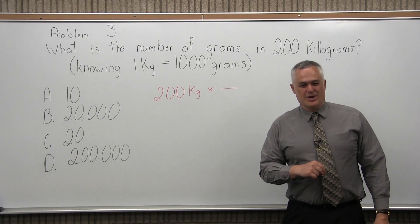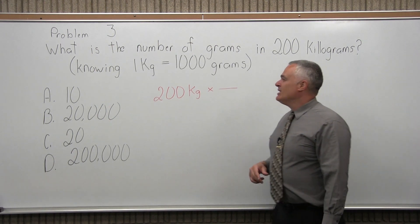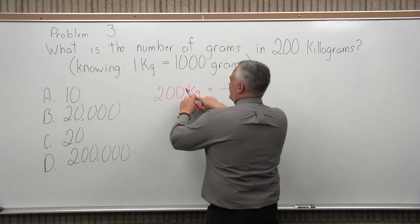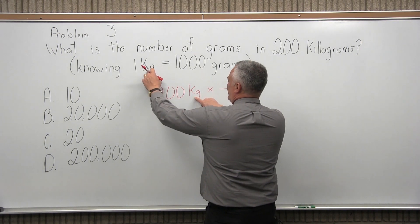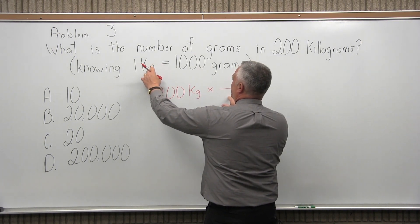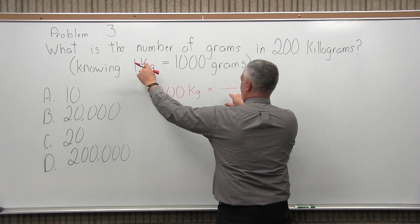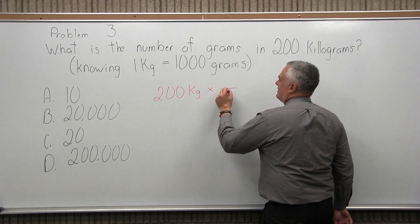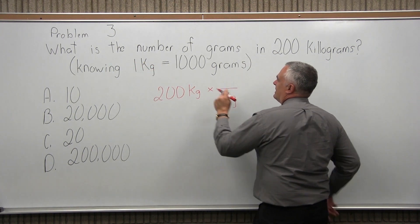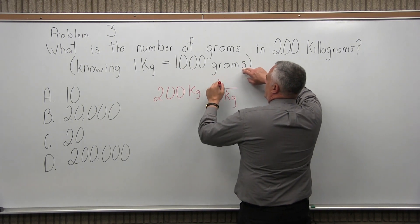Now, what goes in the numerator and what goes in the denominator? If you guess, you have a 50-50. But, if I want to cancel kilograms, what I want to do is make sure that kilograms is in the denominator so it will cancel. So 1 kilogram equals 1,000 grams.